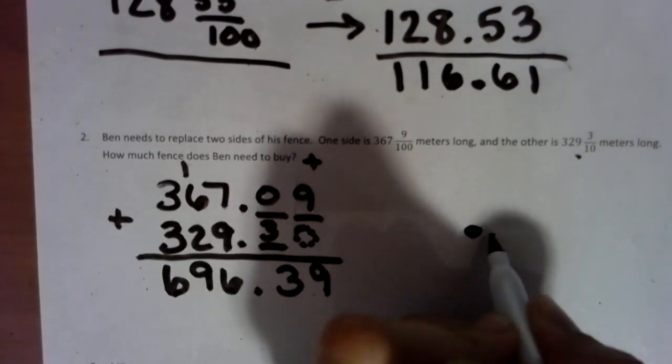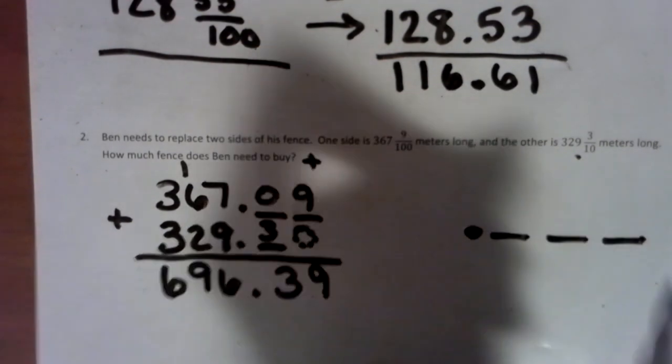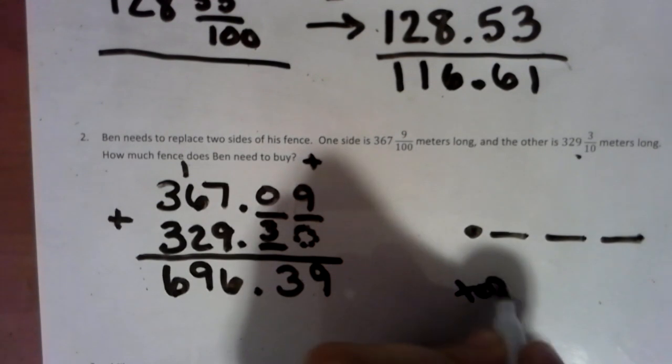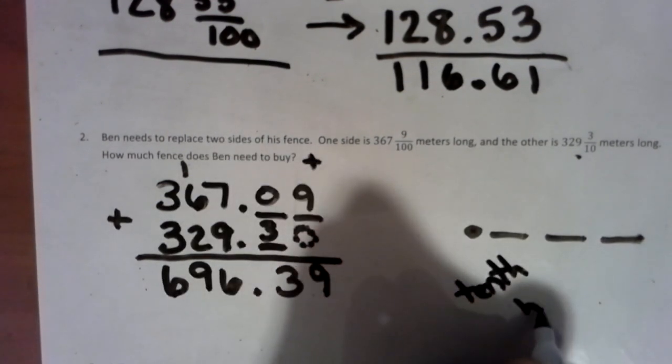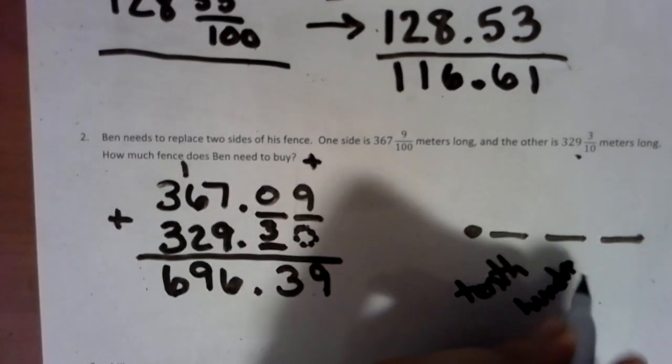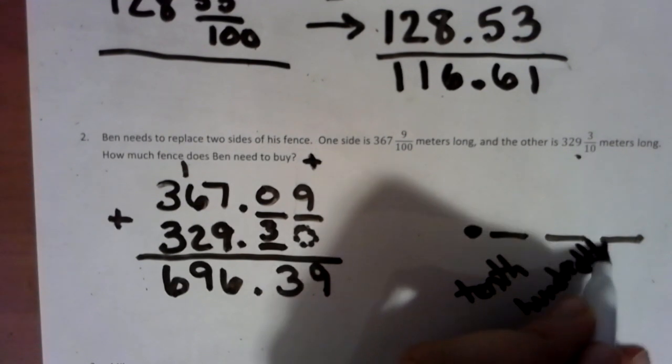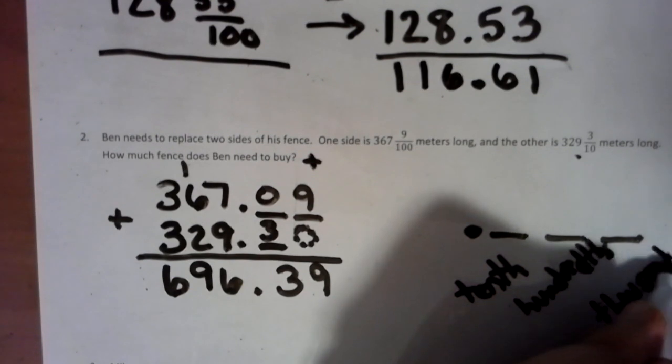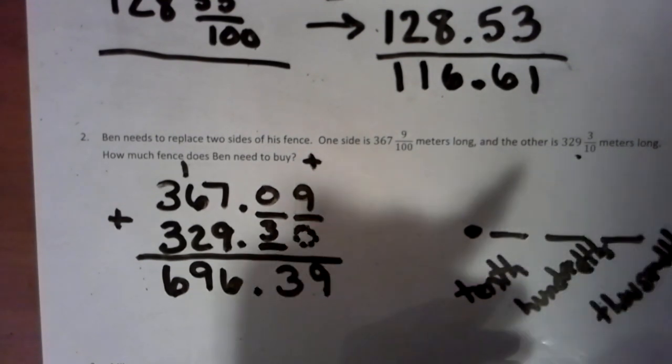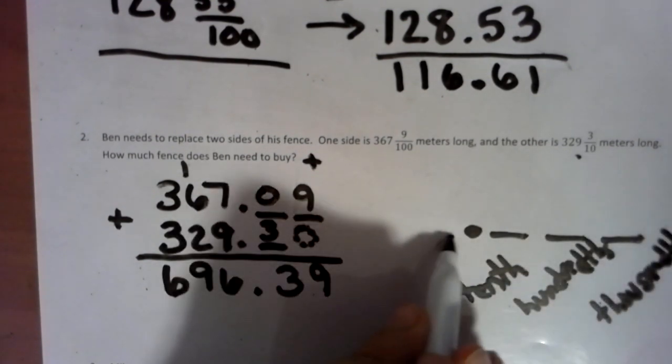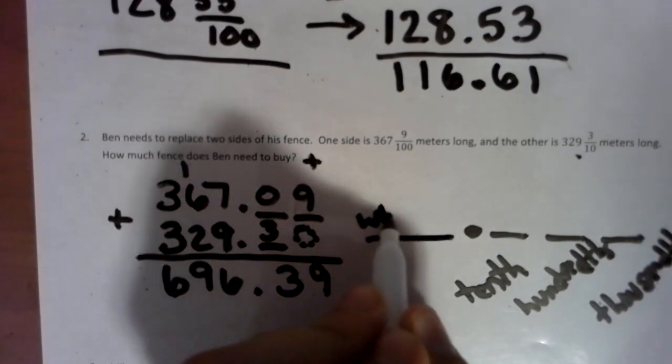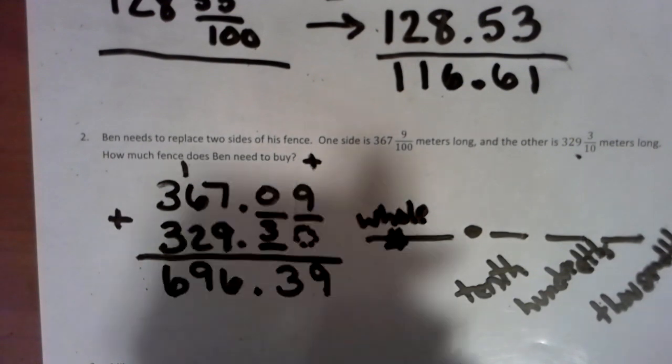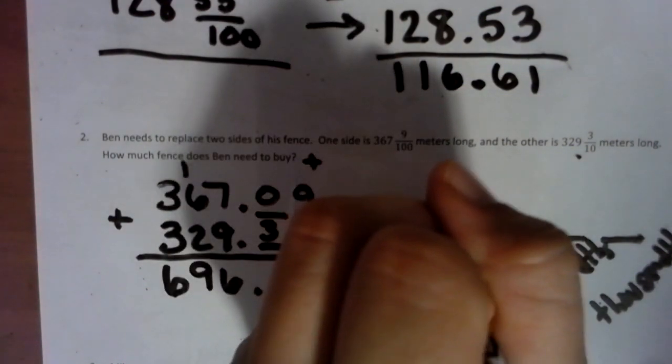Remember, decimal placements. Tenths, hundredths, thousandths. So I'll write that so you can get an idea. Tenths, hundredths, thousandths. THS on the ends of those. This side's the whole number side. And from the decimal point. And the decimal means and.